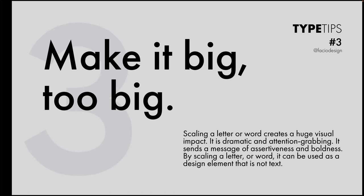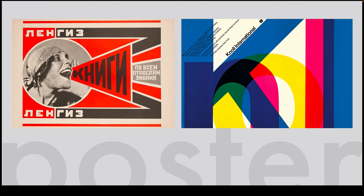Welcome back. This is type tip number three: make it big — too big. What this means is that when scaling a letter or word, it helps create a huge visual impact. It is dramatic and attention grabbing. It sends a message of assertiveness and boldness. Additionally, by scaling a letter or word, it can be used as a design element that is not text. This last part is a little tricky to understand, but once we see an example, we will know exactly what it means. So let's get started.